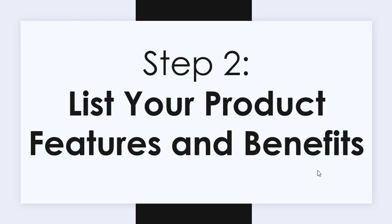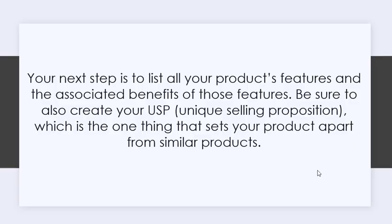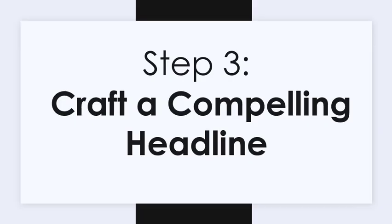Step 2: List your product features and benefits. Your next step is to list all your product's features and the associated benefits of those features. Be sure to also create your USP, or unique selling proposition, which is the one thing that sets your product apart from similar products.